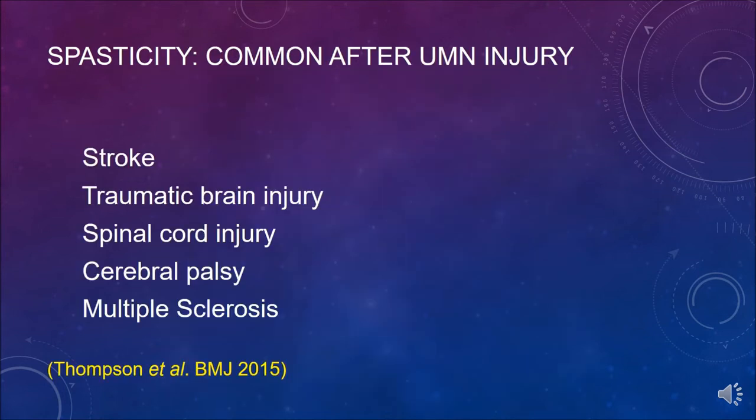Spasticity is common after upper motor neuron injury. It is well documented after stroke, traumatic brain injury, spinal cord injury, cerebral palsy, and multiple sclerosis, with substantial literature in both the pediatric population regarding cerebral palsy and in the adult population as well.